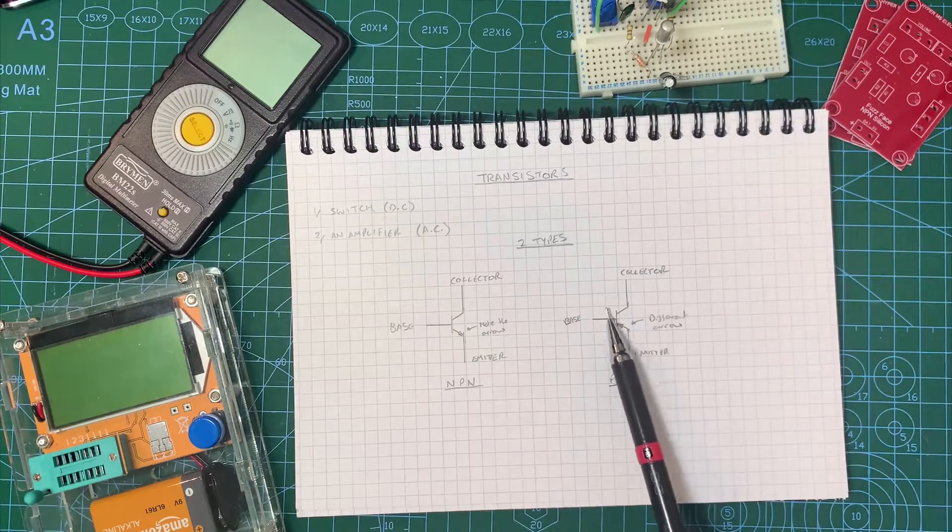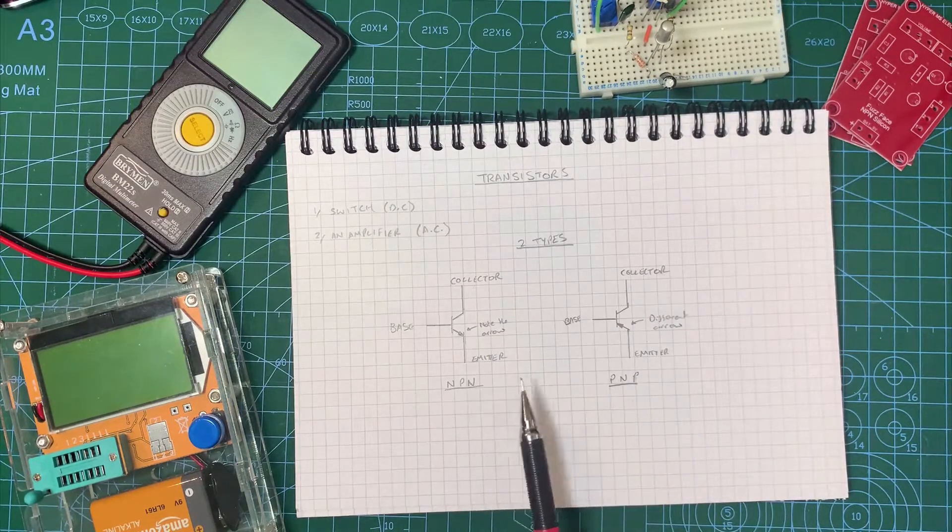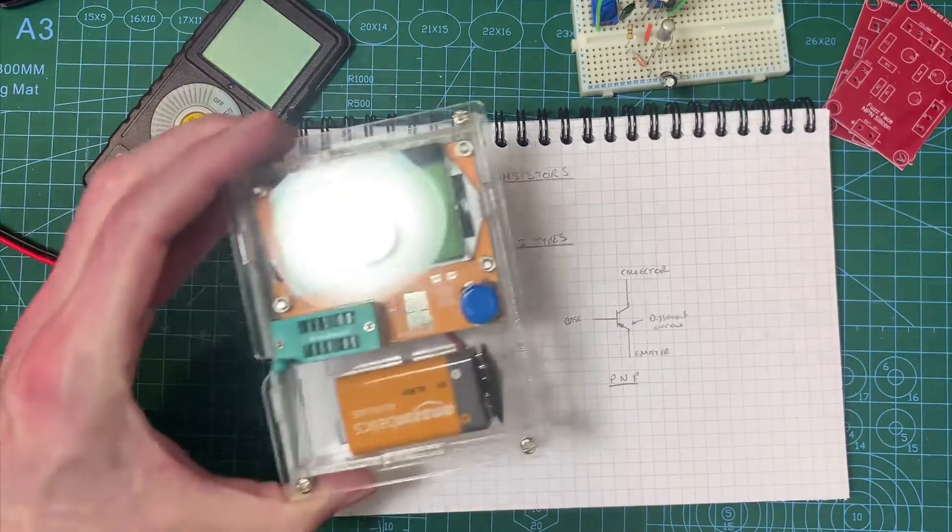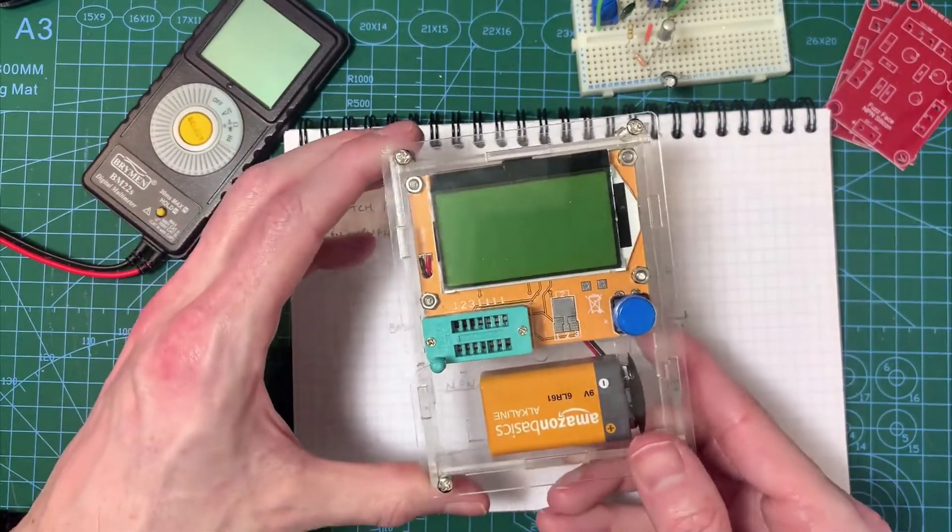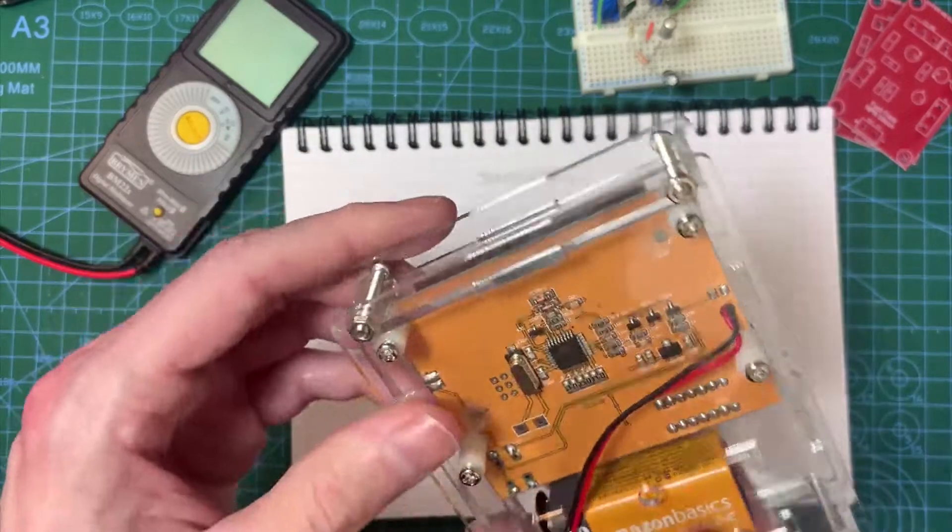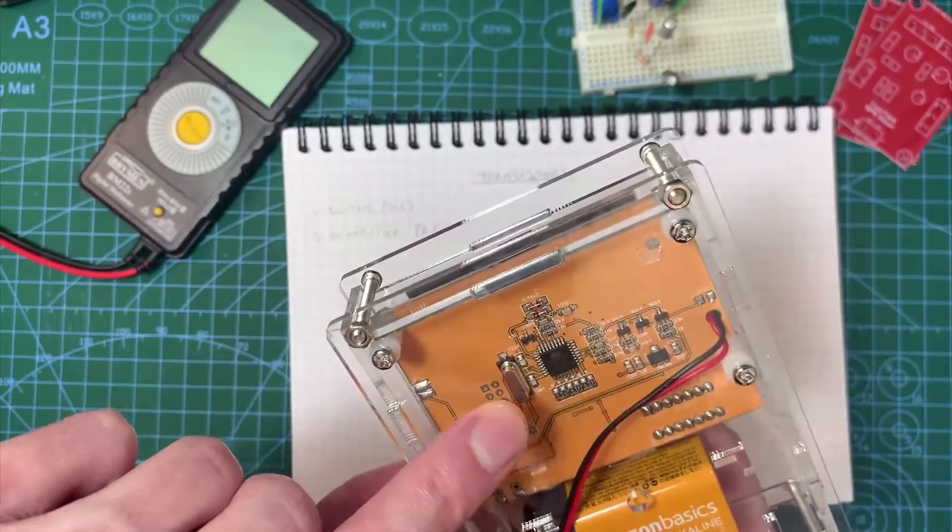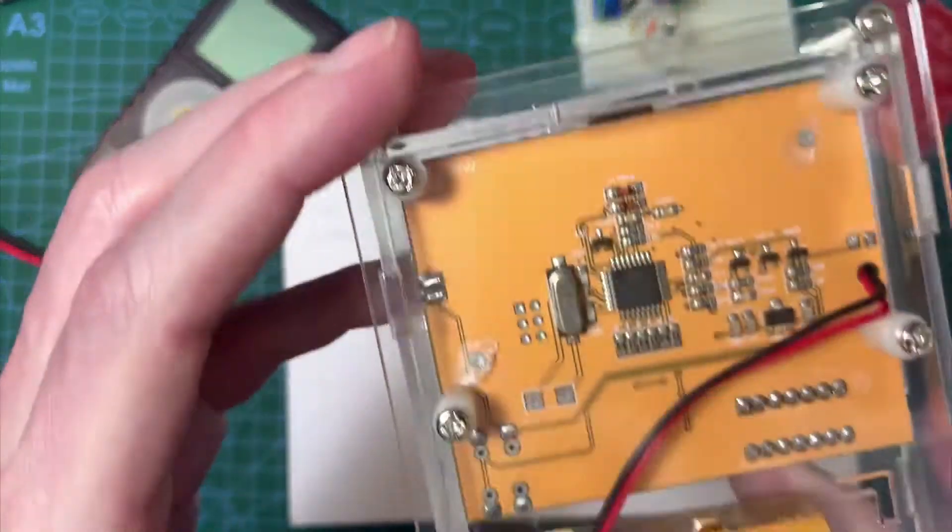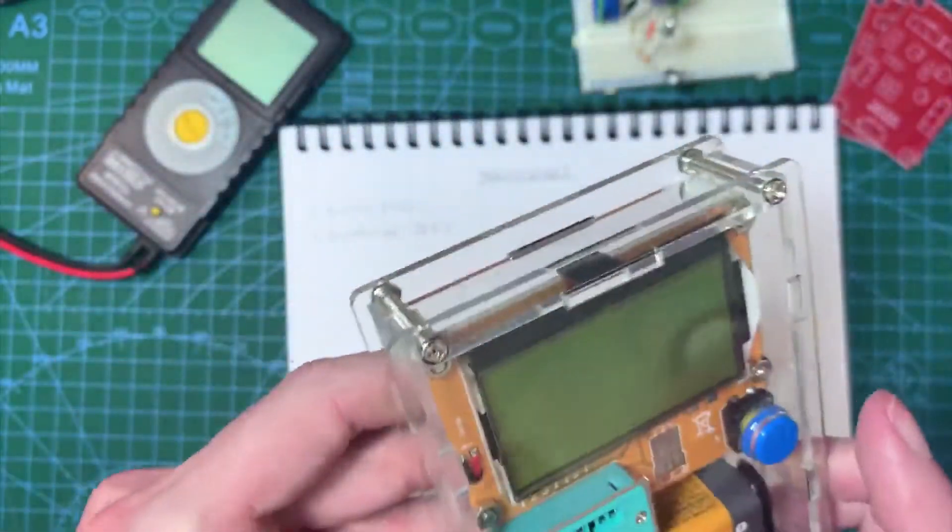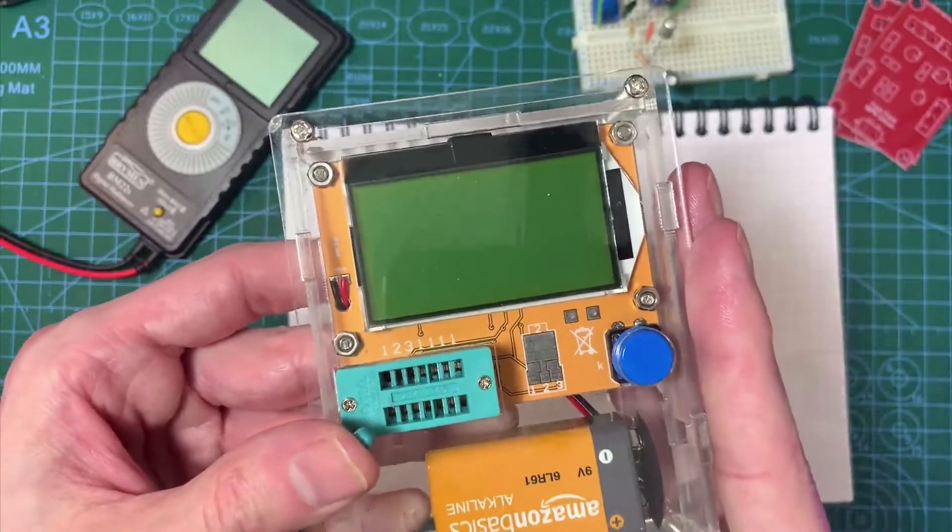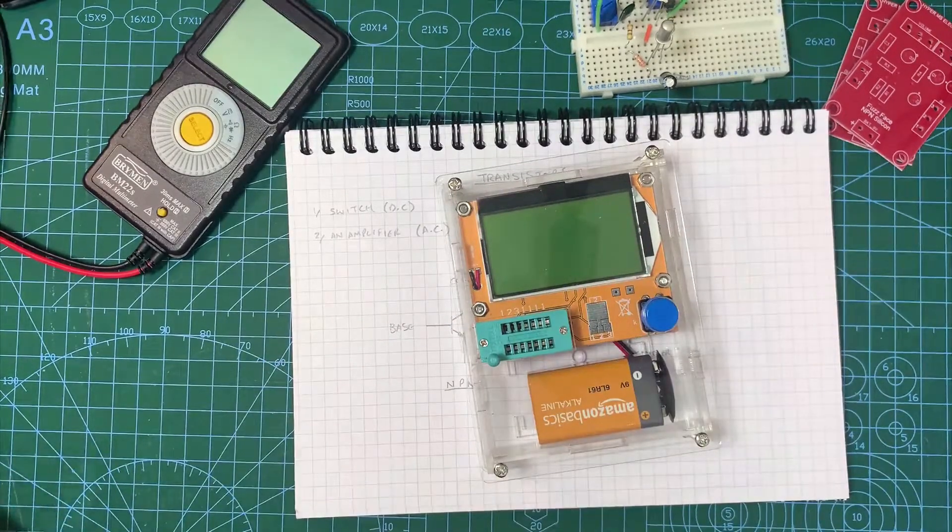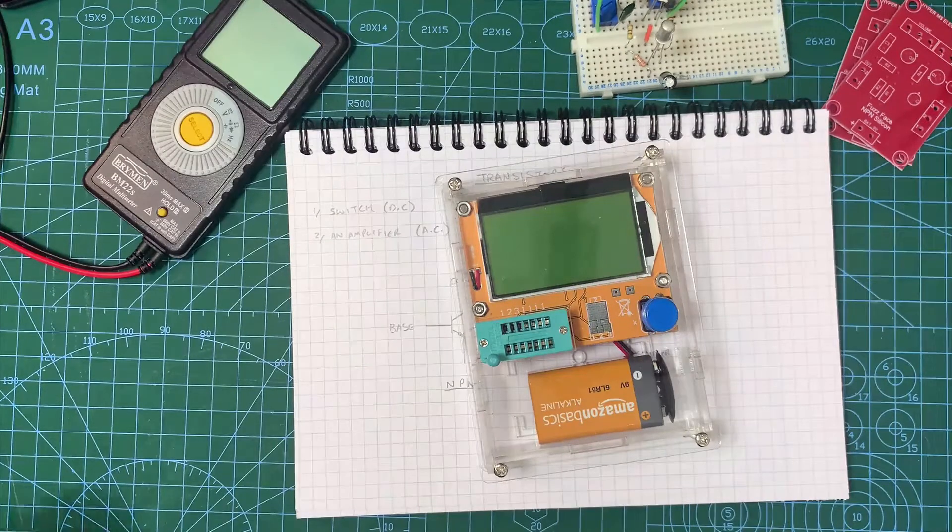So one of the best ways of telling what transistors you're using these days is to grab yourselves one of these testers. They cost about seven pounds on Amazon or eBay, and they're based on an Arduino chip which you can see in there. This is surface mount electronics, which we haven't got into yet - we're using very much through-hole components at the moment. So not very expensive, probably one of the most handy things I've bought for making circuits. And what I'm going to use it for now is just to test some transistors and show you what it says.